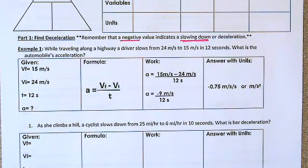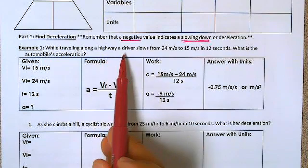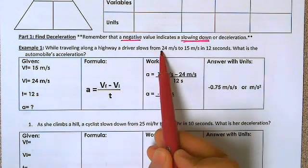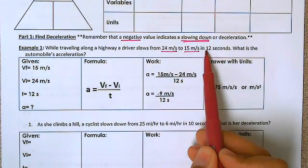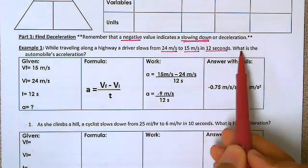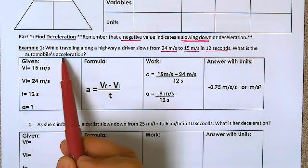So let's look at our first example problem. It says while traveling along a highway a driver slows from 24 meters per second to 15 meters per second in 12 seconds. What is the automobile's acceleration?